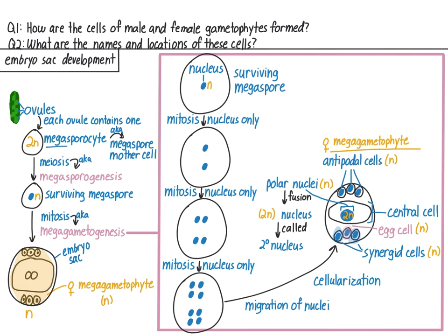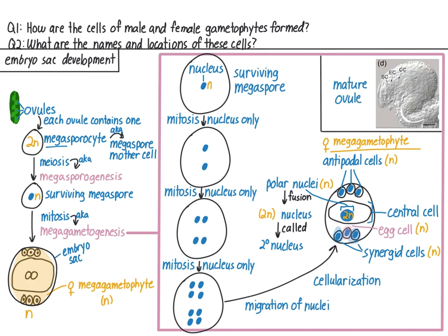If we look at an actual mature ovule under a microscope, the embryo sac is about here, with the synergid cells, the egg cell, and the central cell labeled in this image. Those are the cells of the female gametophyte within the embryo sac.